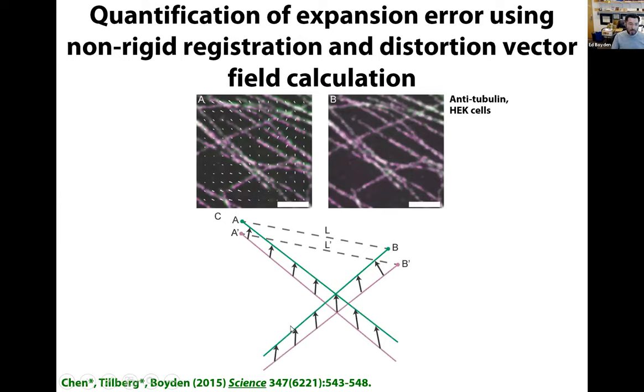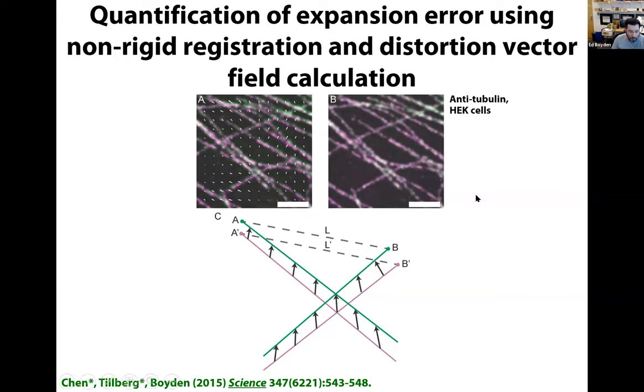First question I always get, is it precise? It's pretty good. We get distortions of a few percent over a typical microscope's field of view. That turns out for the vast majority of biological questions, that's what we want—the relative organization of biomolecules. We've done lots of pre versus post comparisons like shown on this slide to measure the amount of distortion incurred.